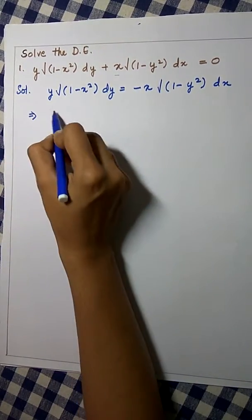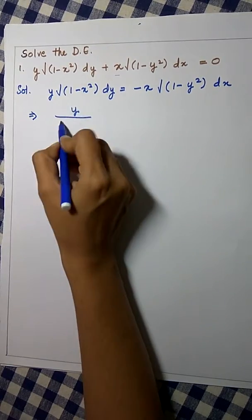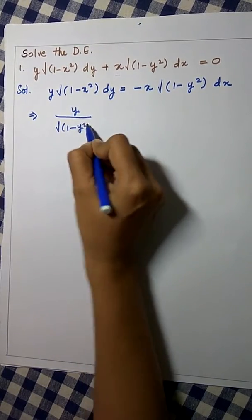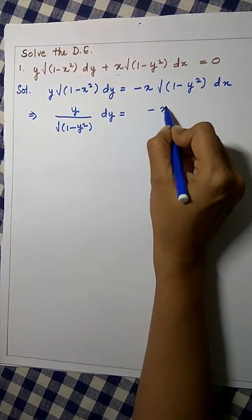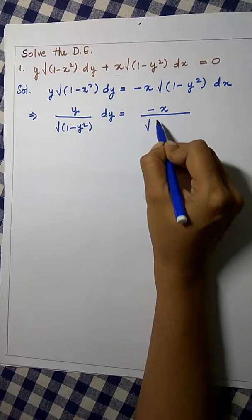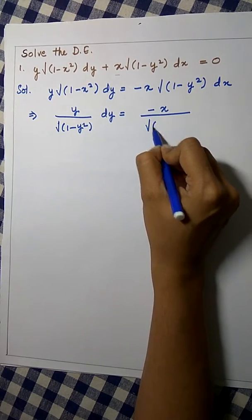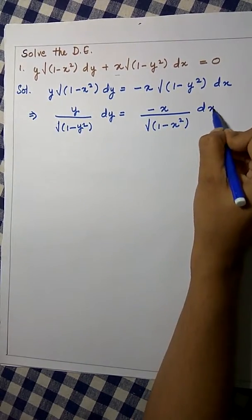So, we will get y upon root of 1 minus y square dy, which is equal to minus x upon root of 1 minus x square dx.